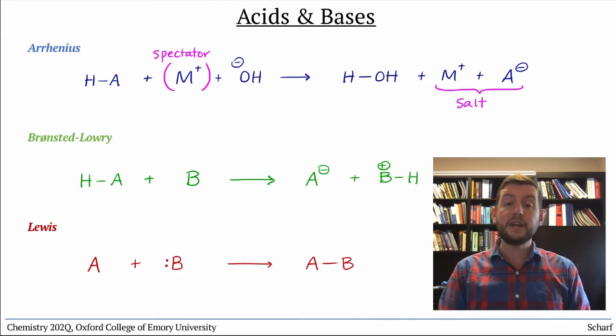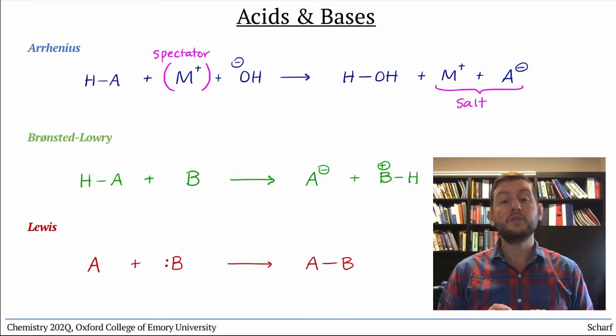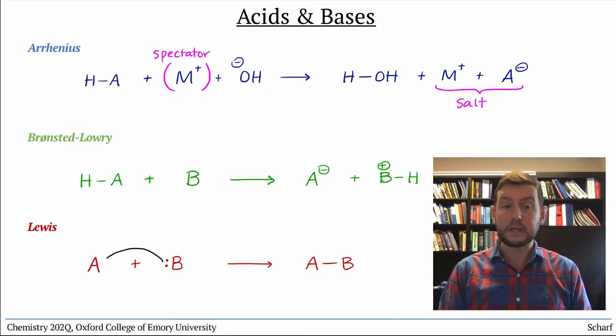A curved arrow begins at an explicitly drawn pair of electrons, like the lone pair on a Lewis base, and goes to an atom that can accept those electrons, like the Lewis acid.